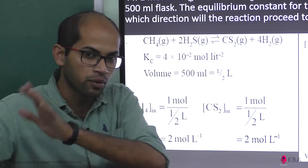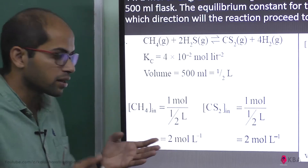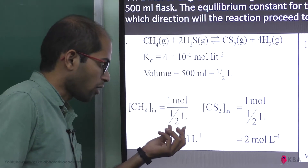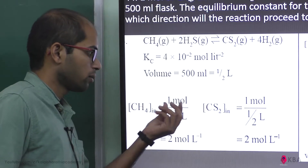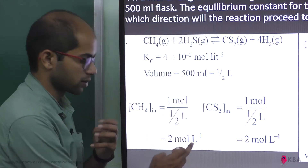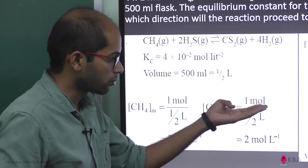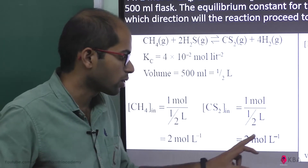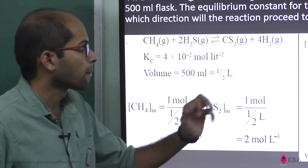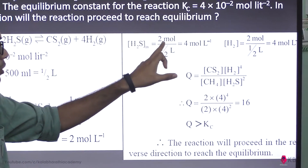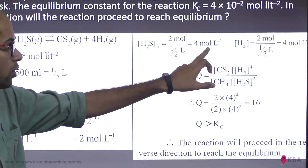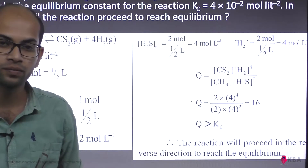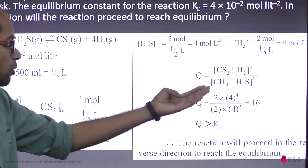If we look at the reactant side and product side, we calculate the molar concentrations. Methane: 1 mol per half liter = 2 mol per liter. Carbon disulfide: 1 mol per half liter = 2 mol per liter. Hydrogen sulfide: 2 mol per half liter = 4 mol per liter. Hydrogen: 2 mol per half liter = 4 mol per liter.